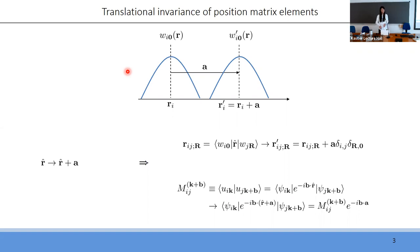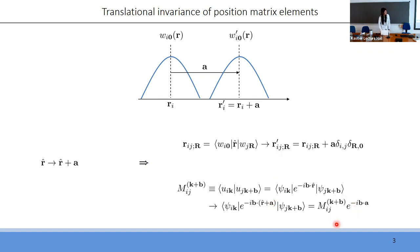Consider translating the whole system — including the electrons and the lattice — by some constant amount a. The Wannier functions and their centers will also translate by the same amount, and the off-diagonal matrix elements will not change due to the orthogonality of the Wannier functions. This property should hold for an accurate calculation, but position matrix elements are usually calculated in an approximate manner. I also note that the overlap matrix elements between two Bloch wave functions transform by a multiplicative phase factor.